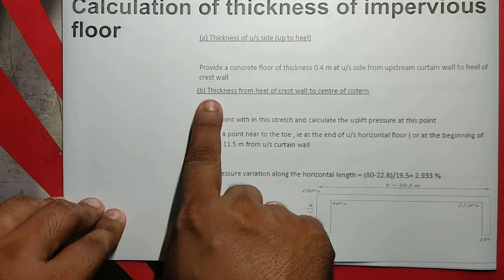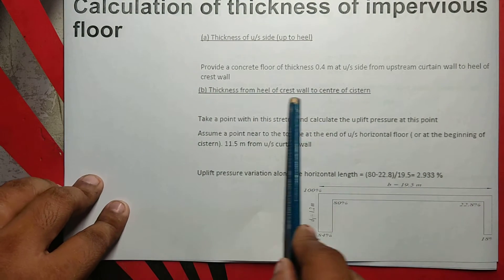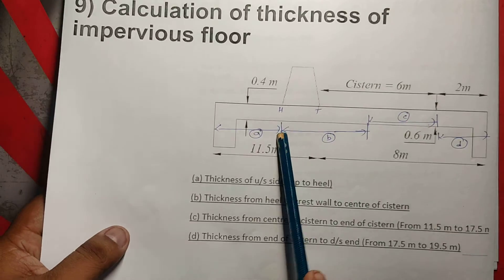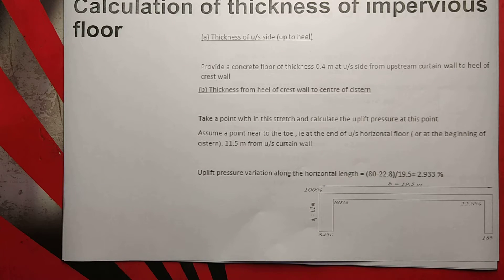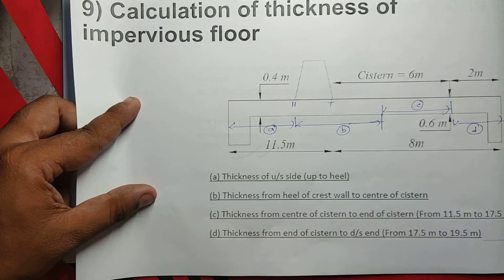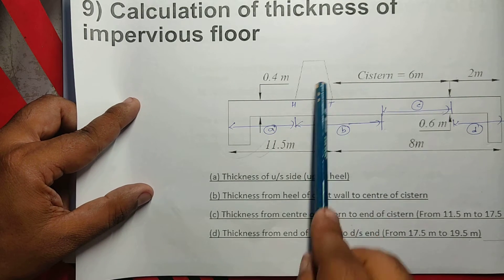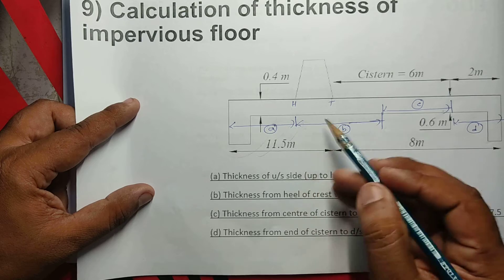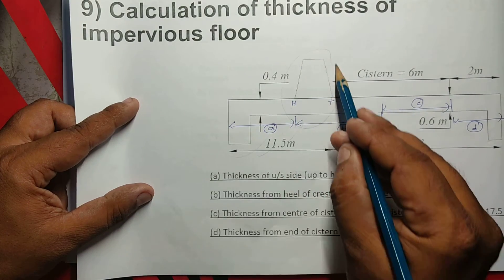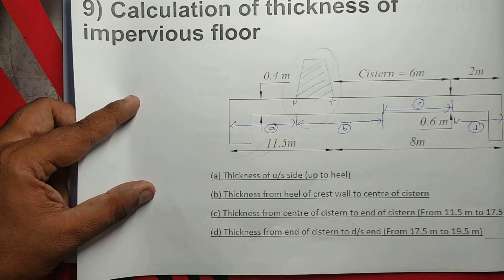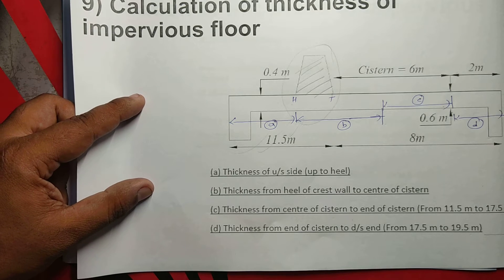The thickness of 0.4m at the upstream side is up to the heel. This is the thickness from heel of Cresswell to center of system. This is the thickness of the heel of Cresswell to center of system. Because of the presence of crust wall, the crust wall is a strong structure.